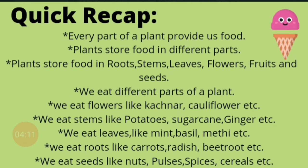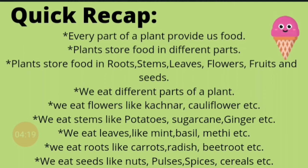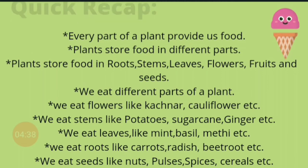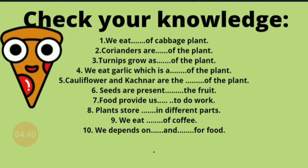Toh fata-fata se recap kar lein. Every part of a plant provides us food. Plants store food in different parts — in roots, leaves, flowers, fruits and seeds. So they all are edible parts of a plant. We eat flowers like kachnaar, cauliflower etc. We also eat stems like potato, sugarcane, ginger. We also eat leaves like mint, basil, etc.